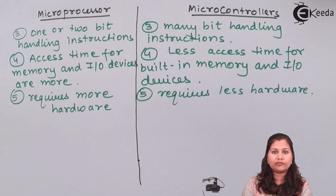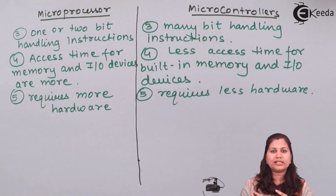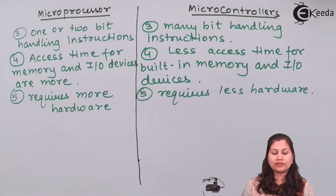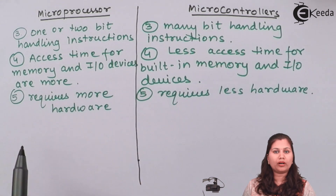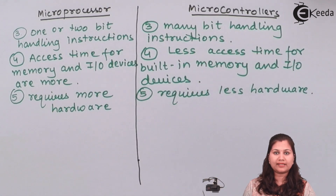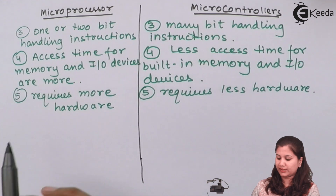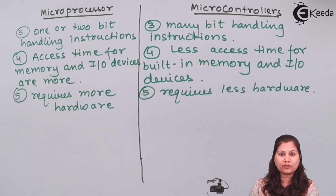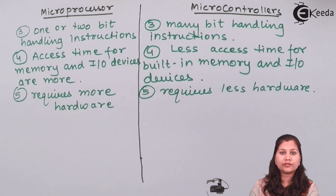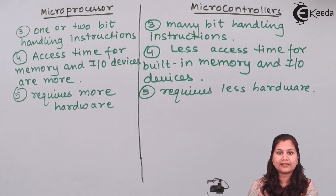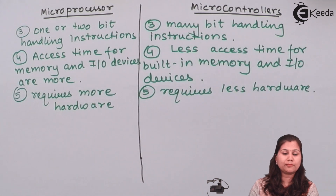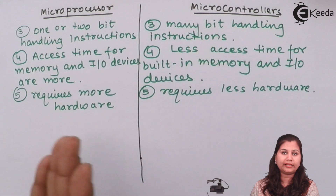In the microprocessor, the ALU, control unit, and memory unit are all separate devices, so applications using a microprocessor require more hardware and increased PCB size. Whereas in microcontrollers, all devices are present on the same chip, so they require less hardware and PCB size is reduced. Also, because all components are on the same chip, reliability is increased — microcontroller-based applications are more reliable than microprocessor-based ones.